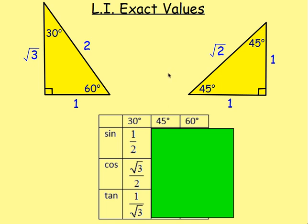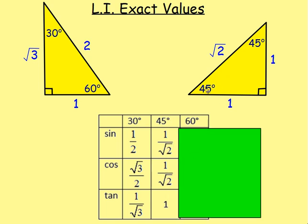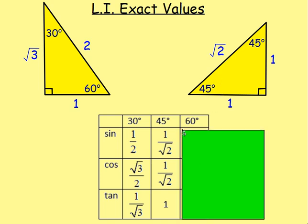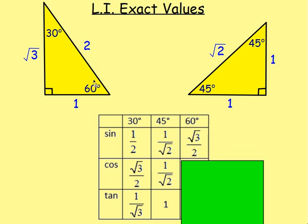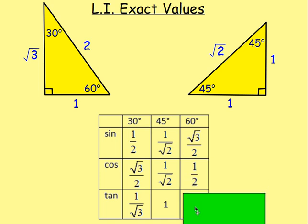For 45 degrees we use the second triangle. Sine of 45 is opposite over hypotenuse: 1 over root 2. Cos of 45 is adjacent over hypotenuse: also 1 over root 2. Tan of 45 is opposite over adjacent: 1 over 1, which is 1. For sine of 60: opposite over hypotenuse gives root 3 over 2. Cos of 60 is adjacent over hypotenuse: 1/2. And tan of 60 is opposite over adjacent: root 3 over 1, which is just root 3.